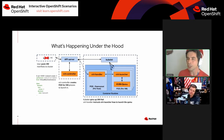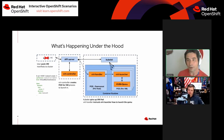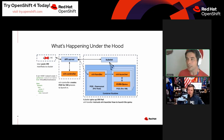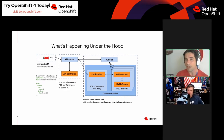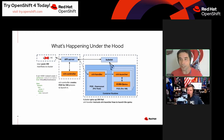OpenShift virtualization relies on that same underlying hypervisor layer that OpenStack and Red Hat Virtualization both utilize. It's all LibVirt, KVM, and QEMU — except it's containerized. This makes it easy to port workloads from one of those platforms into OpenShift virtualization, because it's all the same underlying mechanisms.